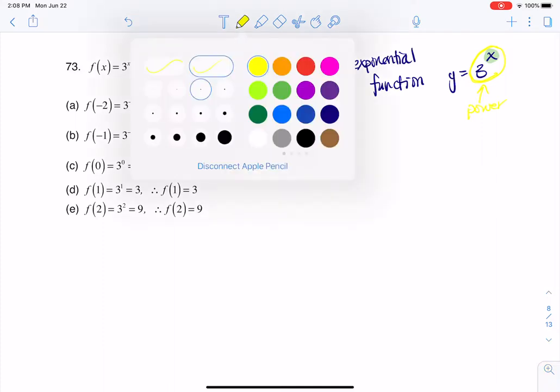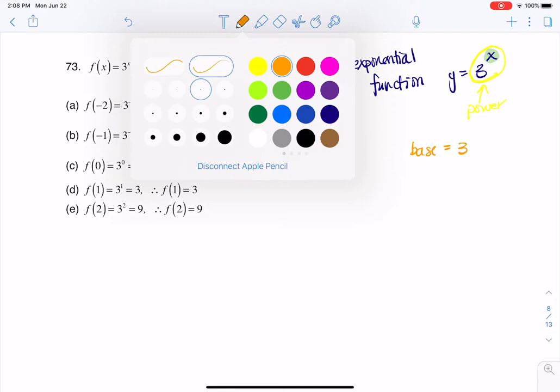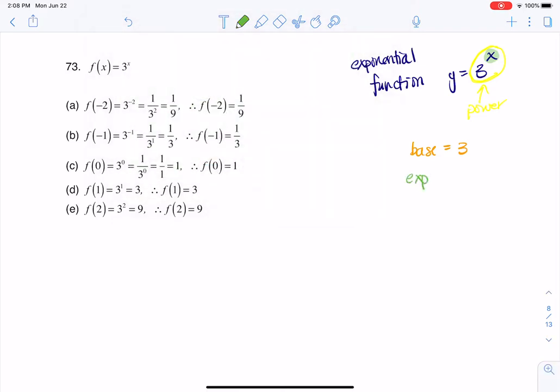Now I'm going to color code this. The base is 3, but the exponent in this case is x. And why I point that out is because eventually when we get to chapter 6, we're going to graph these things. And the way to identify that you have an exponential function is if your variable is up in the exponent.